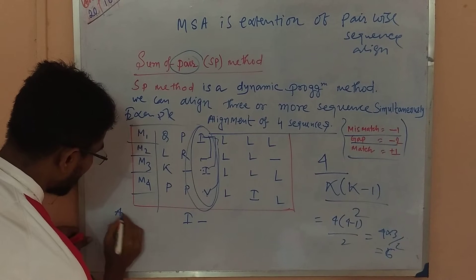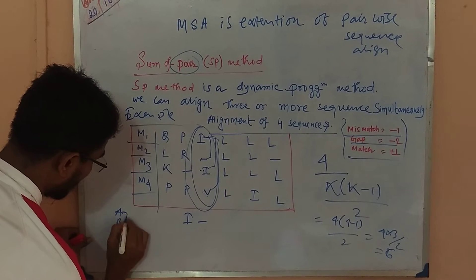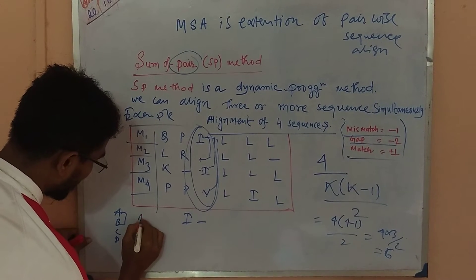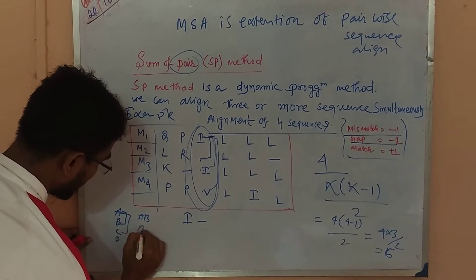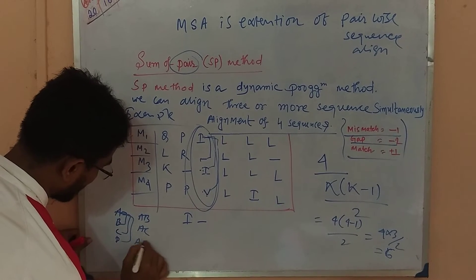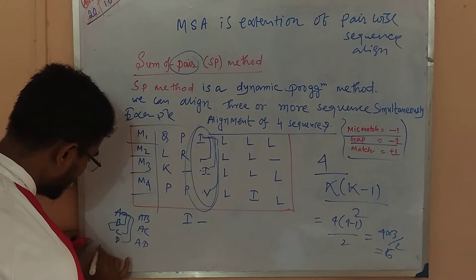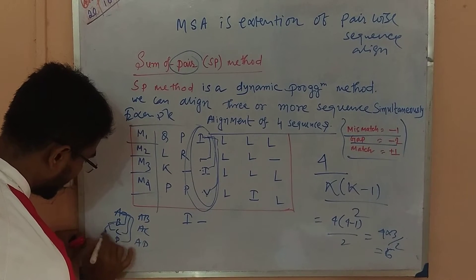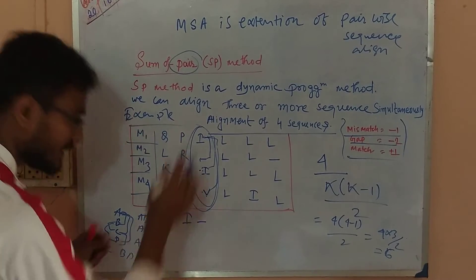For four sequences labeled A, B, C, and D, the six possible pairs are: A-B, A-C, A-D, B-C, B-D, and C-D. This naming convention is important — understanding it helps you solve 50% of the Sum of Pairs problem, since each pair of sequences is scored separately and then summed.